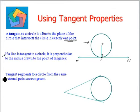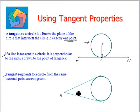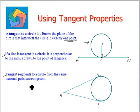The second property is: tangent segments to the circle from the same external point are congruent. Let's say this is an external point A and we have drawn two tangents AB and AC. As per this theorem, tangents drawn from the same external point are congruent, that is, AB is congruent to AC.